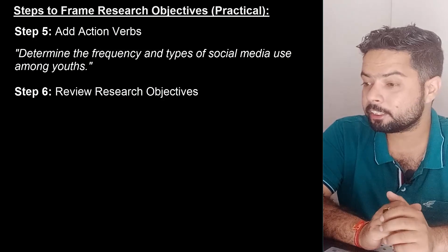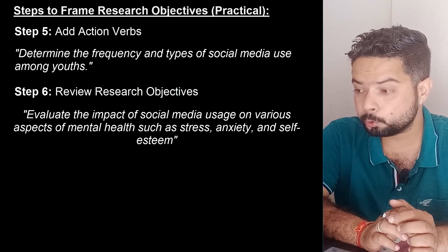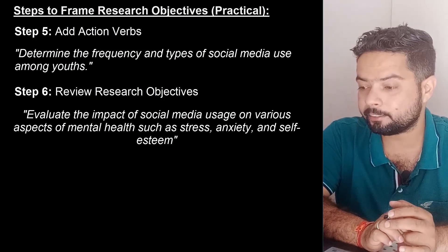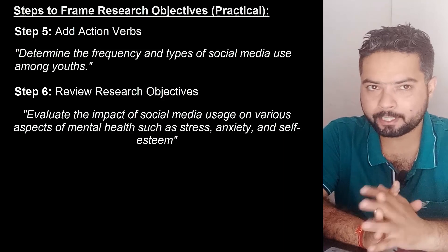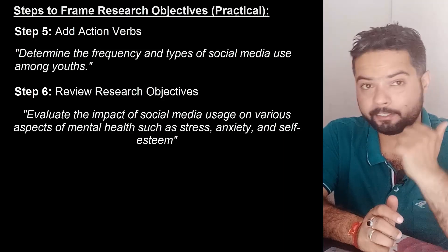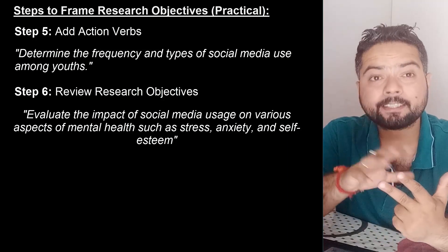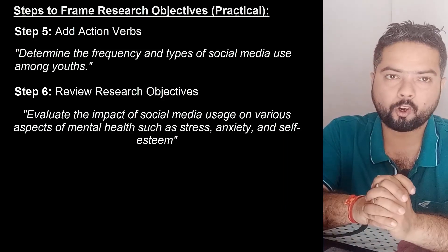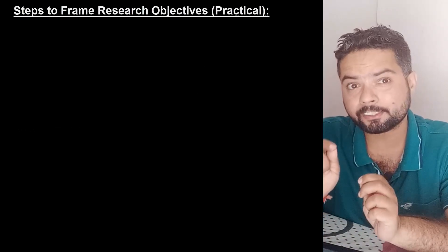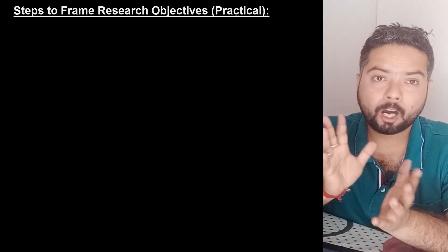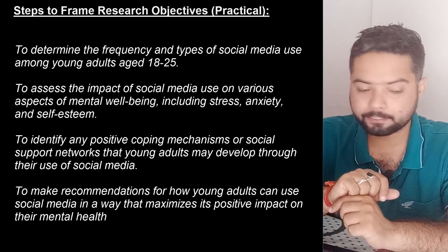Taking the examples considered so far, one achievable research objective is: to evaluate the impact of social media usage on various aspects of mental health such as stress, anxiety, and self-esteem. This objective is clear, specific, and relevant — it can be achieved within the scope of the research. Other possible research objectives created from this major research aim are also listed.